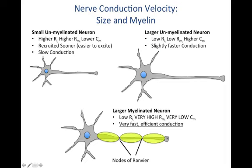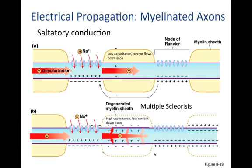Conduction travels down the nerve and is amplified at each of the nodes of Ranvier, where there is very high density of voltage-gated sodium channels. In multiple sclerosis, degeneration of the myelin sheath leads to increased capacitance and decreased membrane resistance, so current is less likely to propagate and more likely to leak out of or stay near the membrane. This underlies many of the symptoms associated with multiple sclerosis.